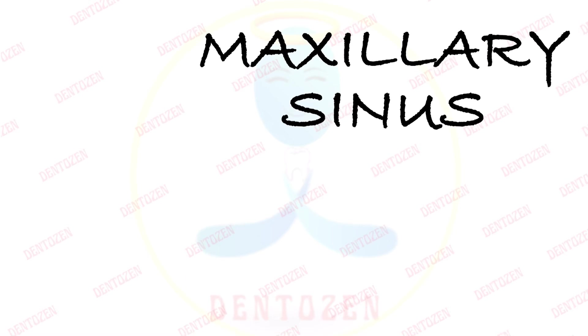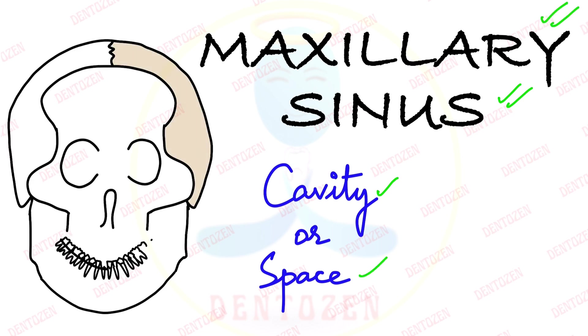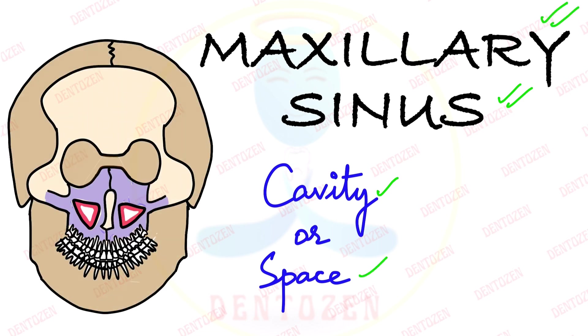Hi everyone, welcome to Tentersend. Today we are going to talk about a sinus. Sinus means a cavity or a space. This space is present inside the maxillary bone, so it is called maxillary sinus — one on each side — and that is the topic for today's video.